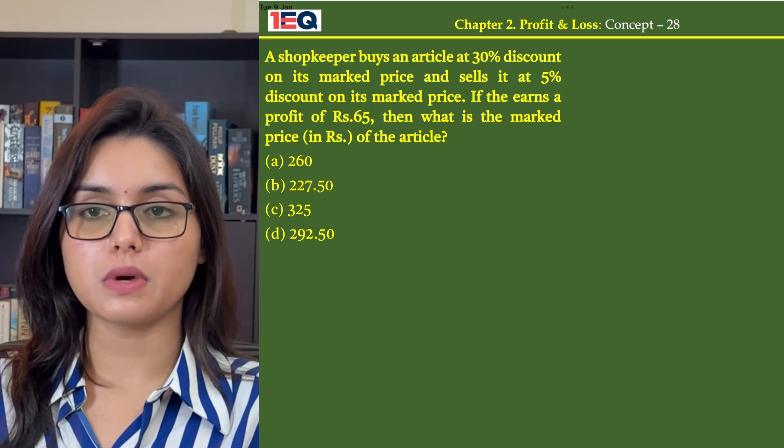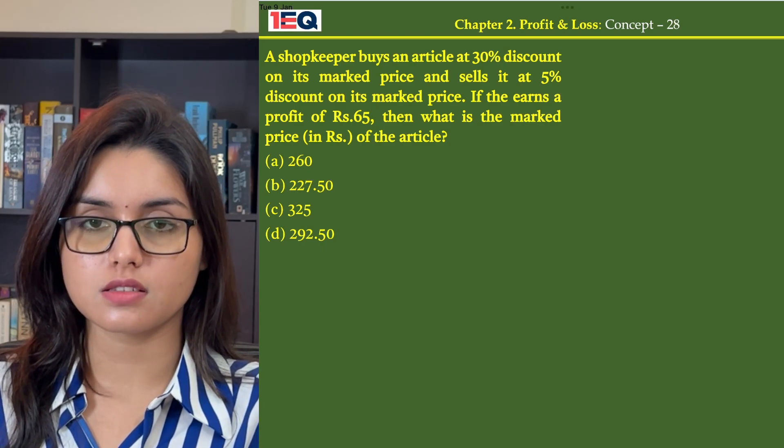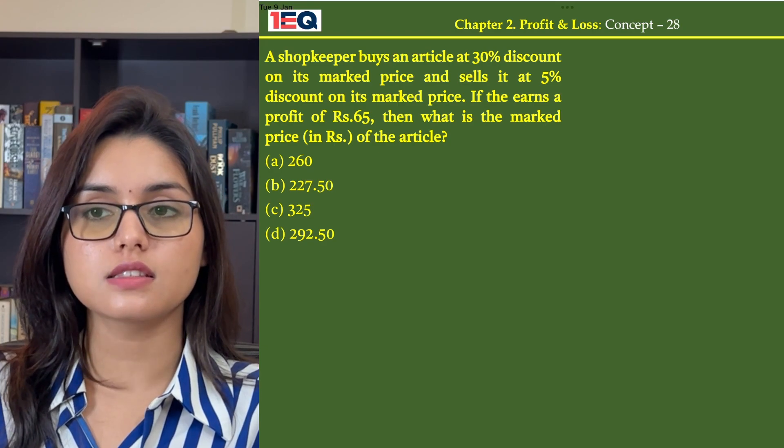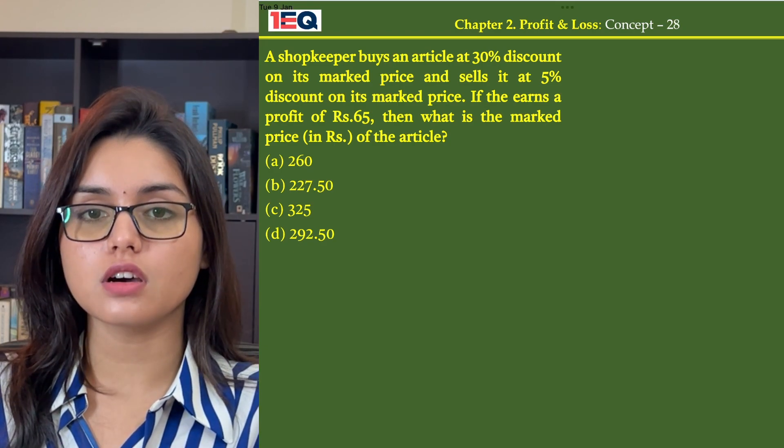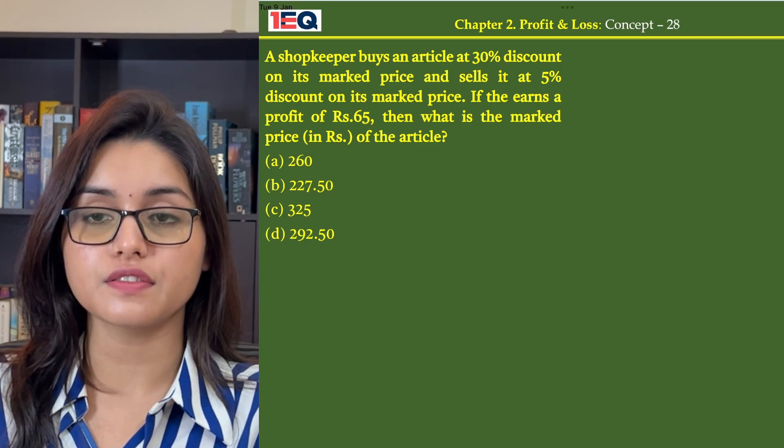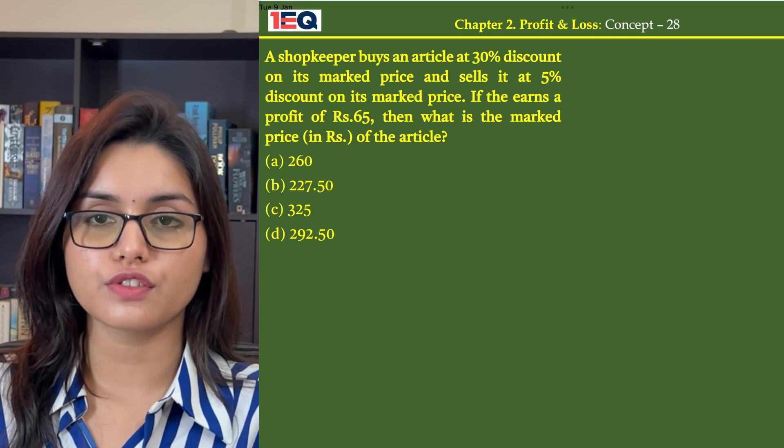A shopkeeper buys an article at 30% discount on its market price and sells it at 5% discount on its market price. If he earns a profit of Rs. 65, then what is the market price of the article?